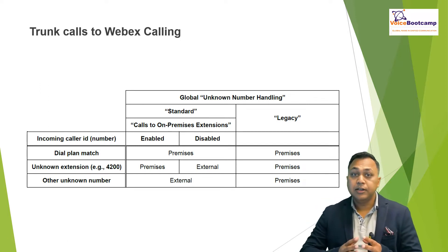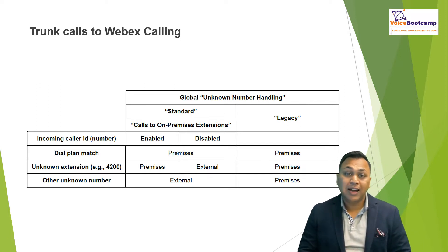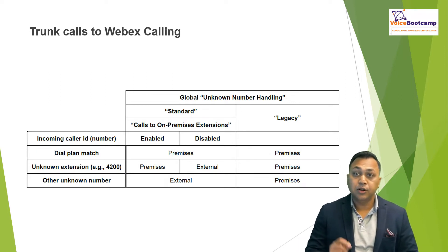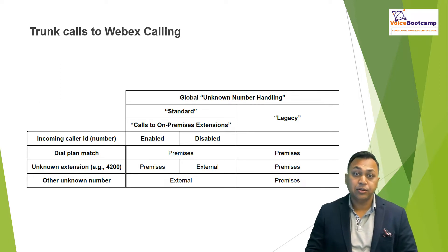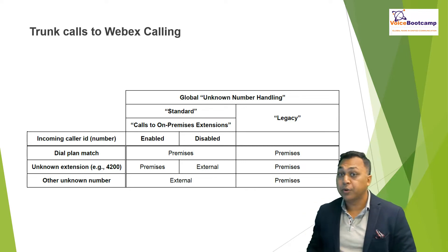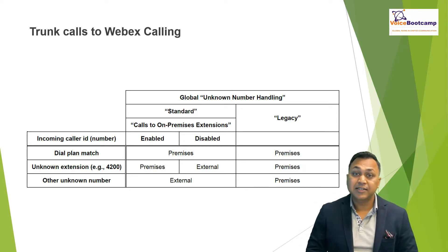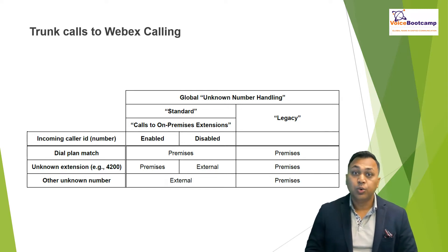If dual identity support is enabled on the particular trunk, then the received FROM header and the PAI headers are treated independently and both are kept for further processing. With dual identity support turned off, only one received identity is kept for further processing, with the PAI header taking precedence.